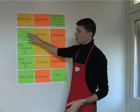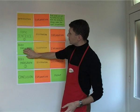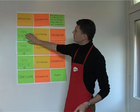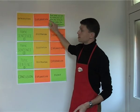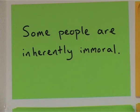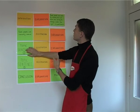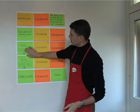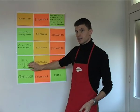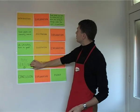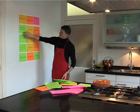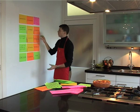Each body paragraph begins with a topic sentence that refers to the thesis statement. Topic sentence one relates to the first part: 'some people are evil by nature' — here we see a similar sentence: 'some people are inherently immoral.' Topic sentence two refers to the second part, 'but we have the ability to change' — and here: 'we ultimately turn to good.' Topic sentence three refers to the last part, 'under the right circumstances' — giving us: 'criminals must encounter the right situation.' These three topic sentences are going to guide my whole essay.